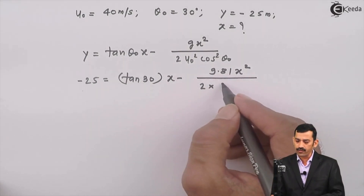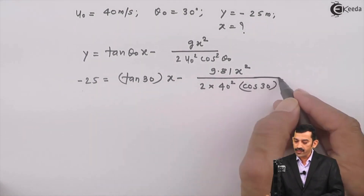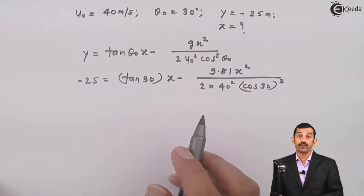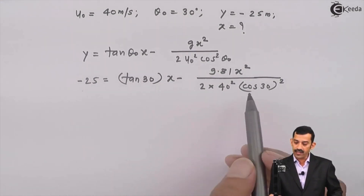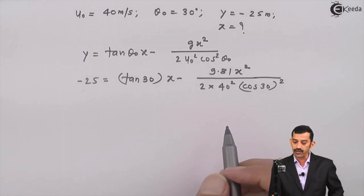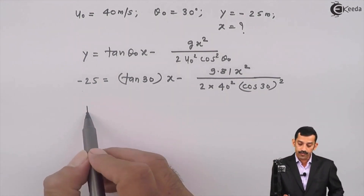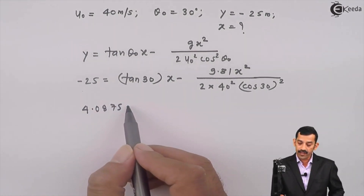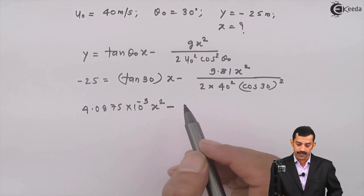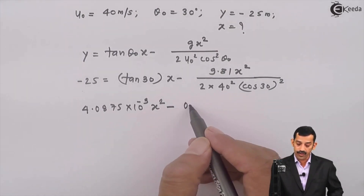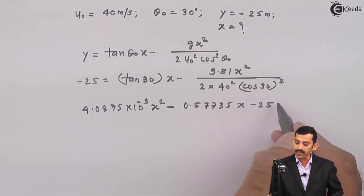Substituting the values: −25 = tan(30°)·x − (9.81·x²) / (2 × 40² × cos²30°). Computing the coefficient: 9.81 / (2 × 1600 × cos²30°) = 4.0875 × 10⁻³. Rearranging, the equation becomes: 4.0875×10⁻³·x² − 0.57735·x − 25 = 0, which is a quadratic equation in x.